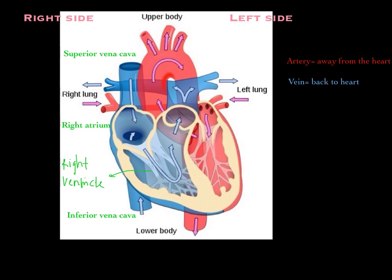Once blood flows from the atrium through the valve into the ventricle, it flows up into the pulmonary artery. Recall that arteries take blood away from the heart, and pulmonary means lungs — so the pulmonary artery takes blood away from the heart into the lungs.